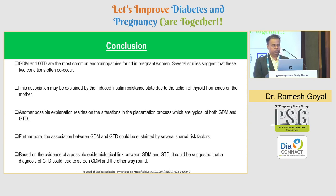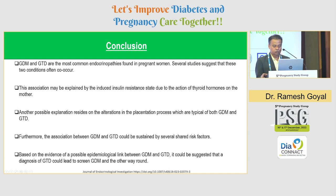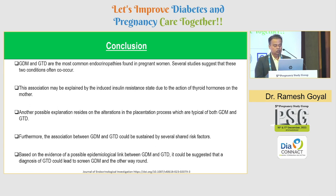To conclude: GDM and GTD are the most common endocrinopathies found in pregnant women, and several studies suggest these two conditions often co-occur. This association may be explained by increased insulin resistance due to the action of thyroid hormones, as well as alterations in the placentation process typical of both GDM and GTD, and several shared risk factors. Based on the evidence of a possible epidemiological link, a diagnosis of GTD should prompt screening for GDM and vice versa. Thank you for your patient listening.